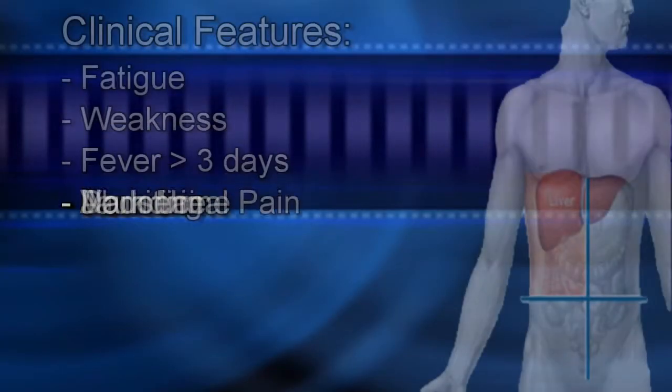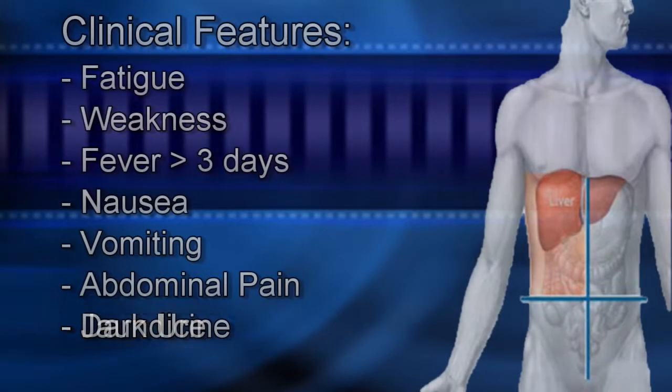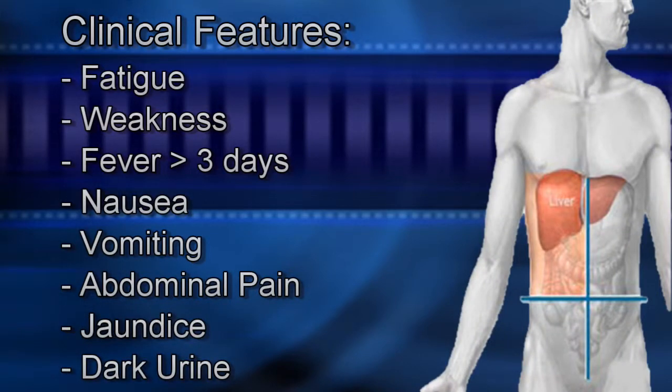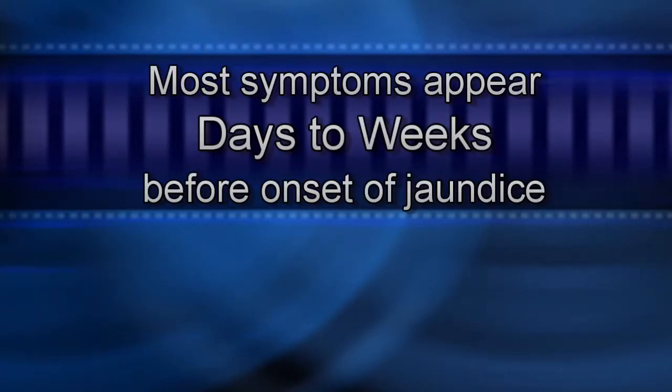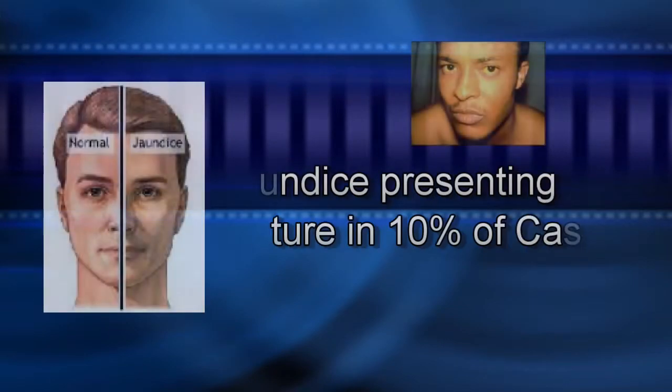So how would a patient with isoniazid-induced hepatotoxicity present? The onset is insidious and resembles acute viral hepatitis. The clinical features include fatigue, weakness or fever exceeding three days, nausea, vomiting, unexplained abdominal pain, jaundice, and dark urine. Most symptoms appear days to weeks before onset of jaundice, which is usually the presenting feature in 10% of cases.